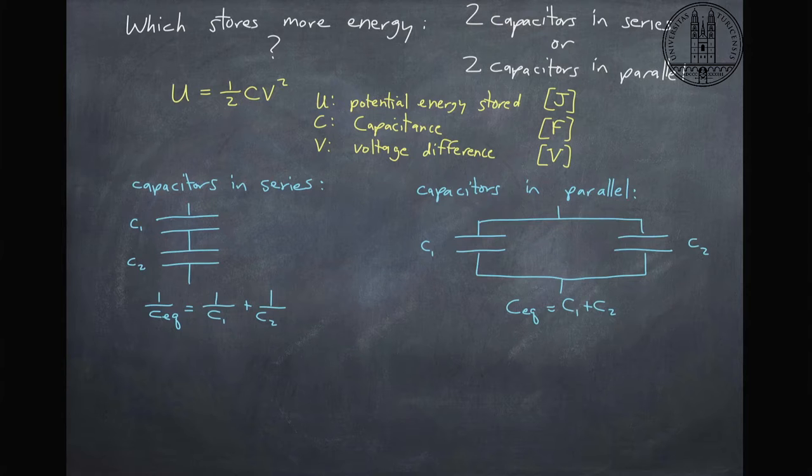Now the capacitance of two capacitors in series adds up in a certain way. Here is one over the equivalent capacitance is one over C1 plus one over C2. Whereas the capacitors in parallel, the capacitances just add linearly. So it's as if you have two capacitors and you create one big capacitor just by adding the two together. You're increasing the area of your capacitor.